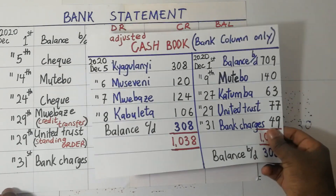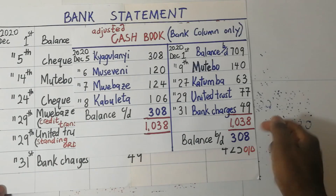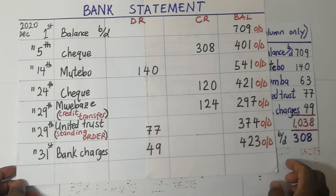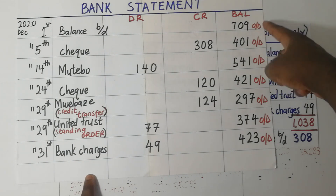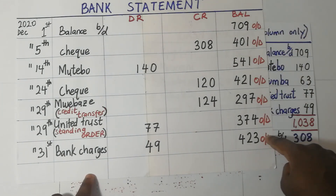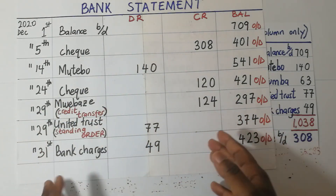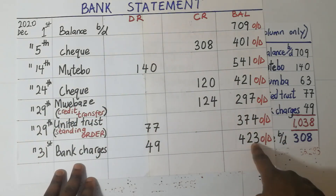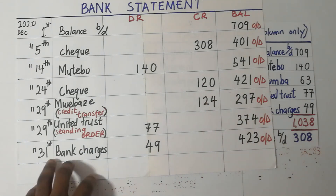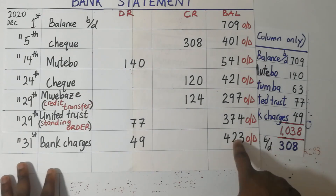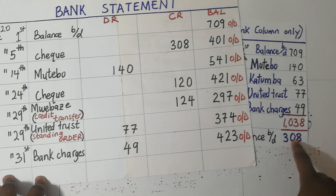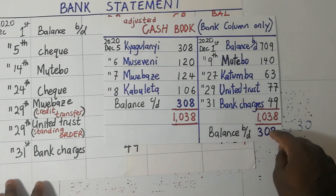Here we have this cash book — this is the bank overdraft — and we are having a bank statement as well. It is reflecting bank overdraft, O/D, simply meaning overdraft. So for this particular entity, the bank is having an overdraft of 423. This is the overdraft as at the bank statement. And you can see that the overdraft as at the bank statement is not the same as the overdraft as at the cash book, so we need to reconcile these two.